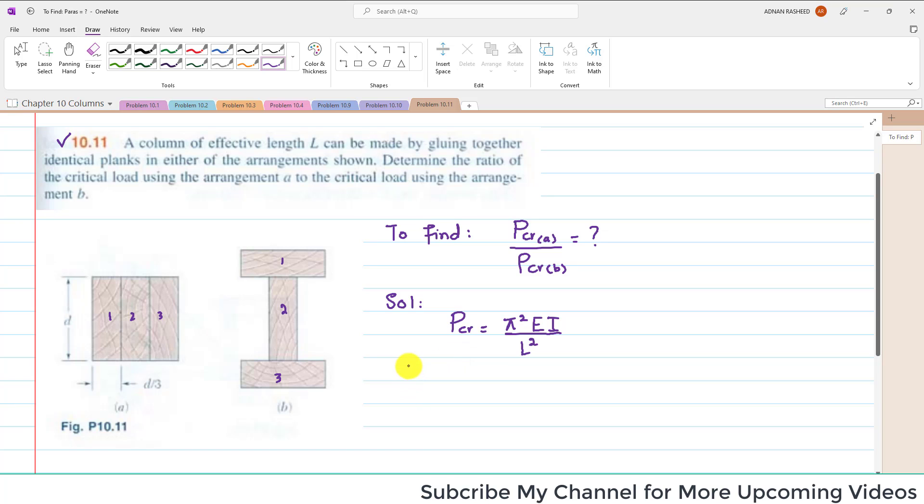We will first find I for plank A. If you look at this first arrangement, the center is at a distance of D/2. If I draw a vertical axis, it will also be at a distance of D/2, because D/3 + D/3 + D/3 equals D.